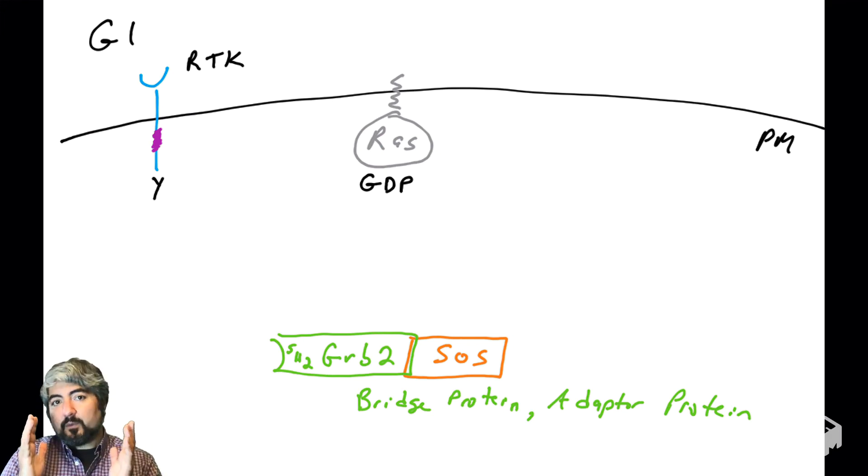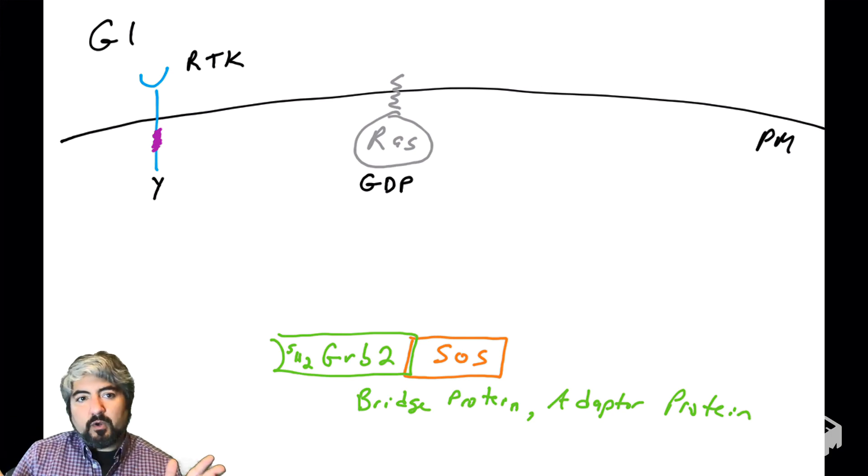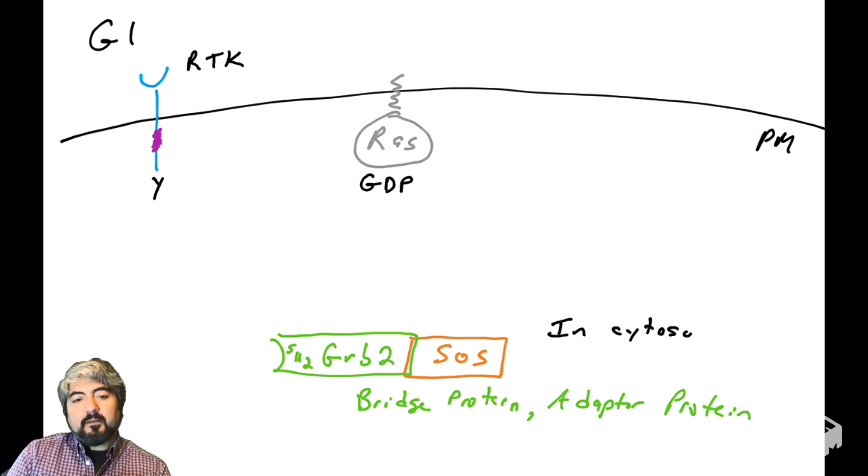SOS and GRB2 are two different proteins bound together with high affinity. Typically you find them bound together. SOS is a guanine nucleotide exchange factor. GRB2 is a bridge protein or adapter protein that bridges the gap between the receptor and RAS. Here's a cell in G1. The tyrosines in the tails of receptor tyrosine kinases are not phosphorylated. GRB2 and SOS are in the cytosol, not anywhere near the plasma membrane. The cytosol is a very big place, and SOS, which is supposed to exchange GDP, is nowhere near RAS, so it's not going to do much.